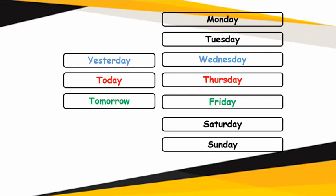Here, today is Thursday. Now, can I ask you to read the name of the day that was yesterday? It's blue in color and begins with W. Which day? Yesterday it was Wednesday. So if yesterday it was Wednesday and today it is Thursday, tomorrow it will be which day? Match the green color and say Friday. So tomorrow it will be Friday.